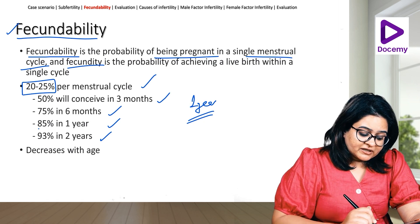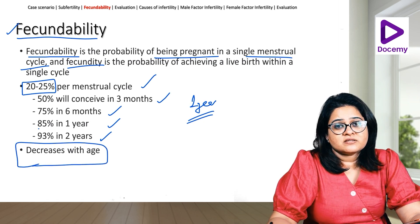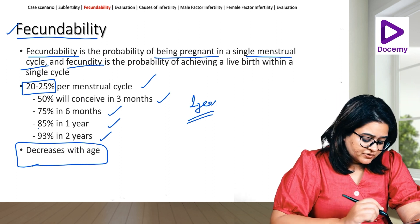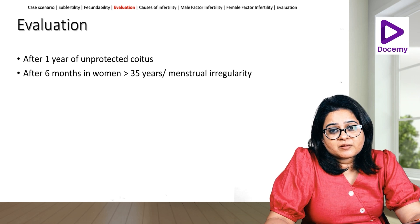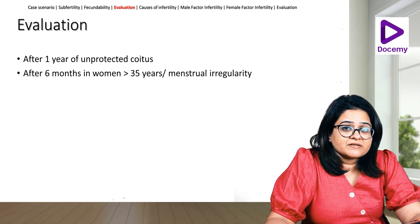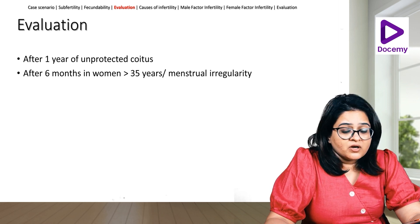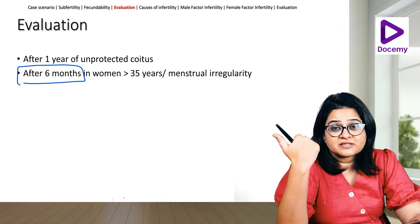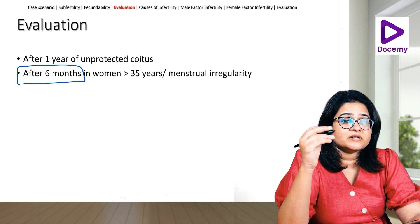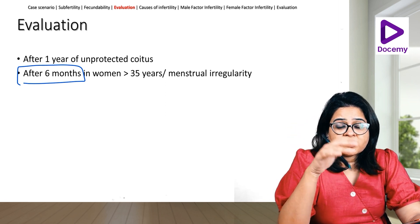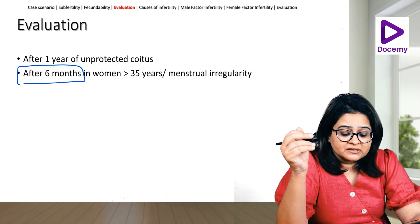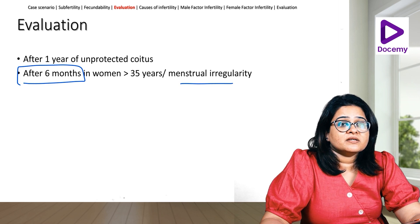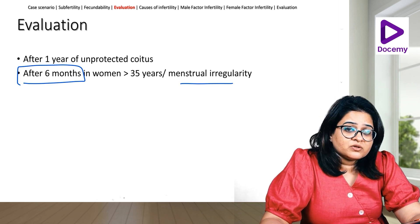Fecundability decreases with age, and maternal age is more important than paternal age. So when do we start evaluation? We start evaluating a couple if they've been unable to conceive despite a year of unprotected regular intercourse, or earlier — after six months — if she's already 35 years and above. We also start earlier if she has menstrual irregularity, as that suggests an ovulatory disturbance.